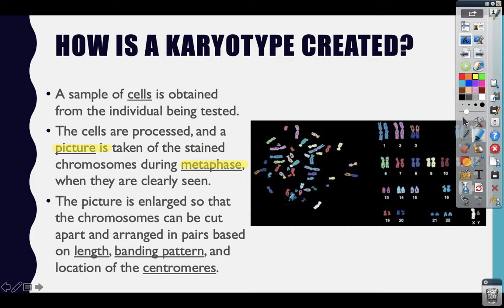When I was in high school doing karyotyping activities, we would actually have to cut out each individual chromosome and then try to figure out which other chromosome would match up with it. Today, we use computer software to match up the chromosomes based upon their length, their banding pattern, and the location of those centromeres, which I talked about when we discussed chromosomal structure disorders.